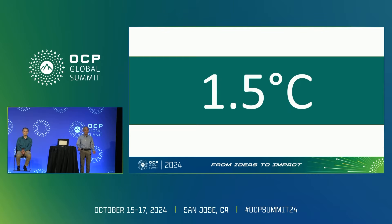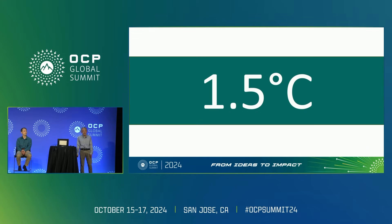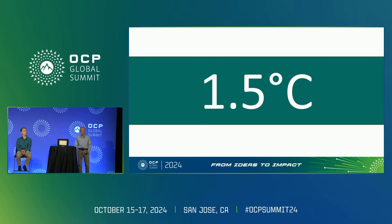So where does 1.5 degrees C centigrade come from? That's a question everybody asks when coming here. At the UN climate change Paris meeting in 2015, there were 196 participants who got together to discuss climate change. They signed a treaty agreeing to limit global warming to 1.5 degrees C compared to pre-industrial times. That's the key thing about 1.5 degrees C.